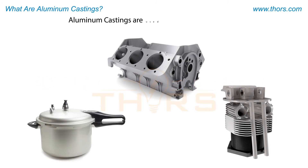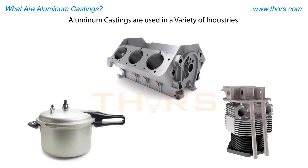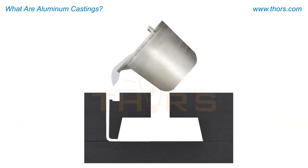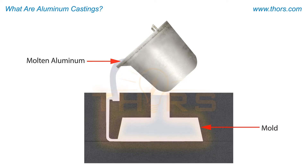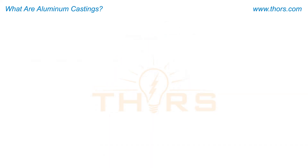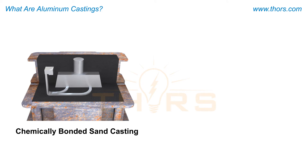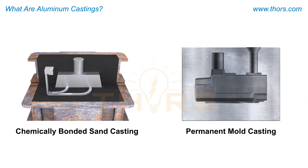Aluminum castings are used in a variety of industries such as food service, automotive, aerospace, and many others. The production of cast aluminum involves heating the metal to molten temperatures and pouring it into molds of a specific size, shape, material, and design. Various processes such as chemically bonded sand casting and permanent mold casting processes are utilized to produce aluminum castings.